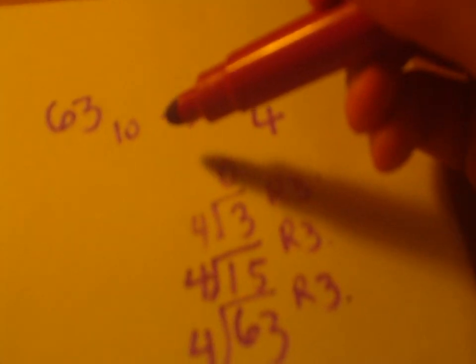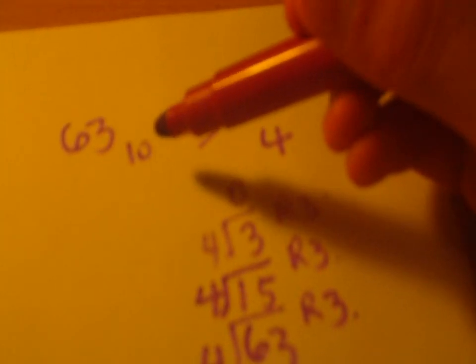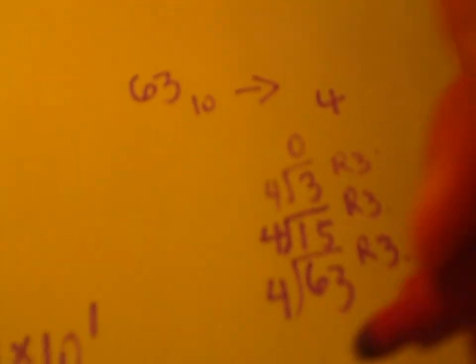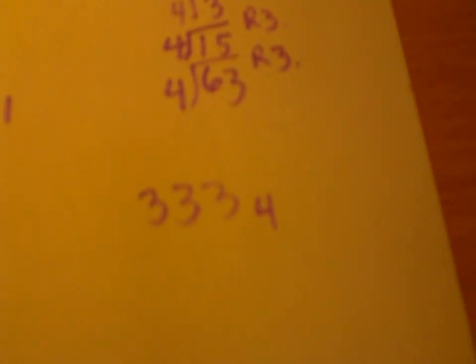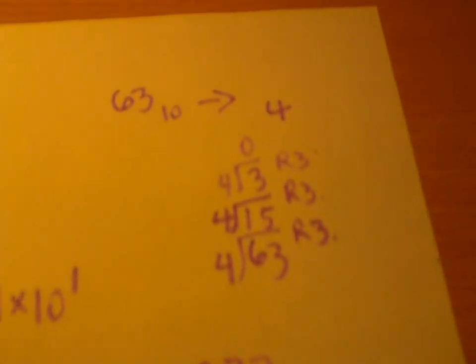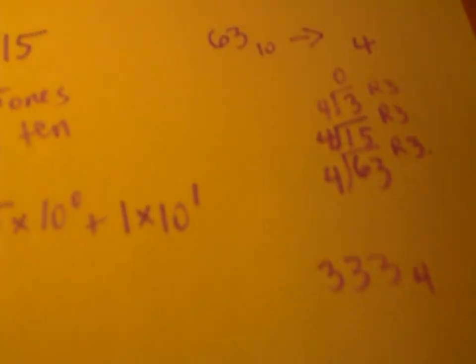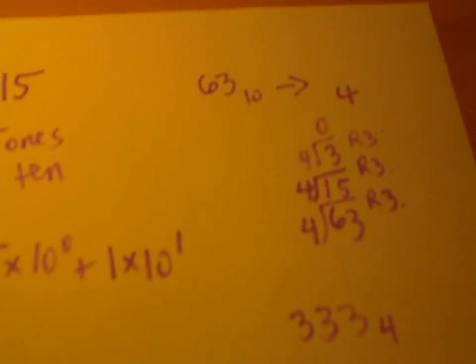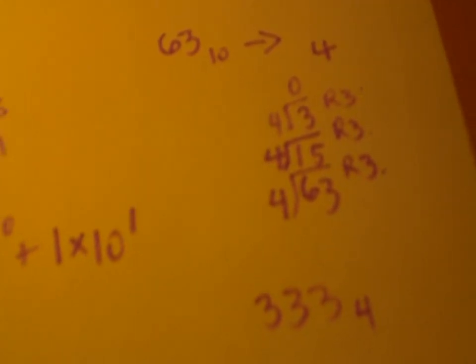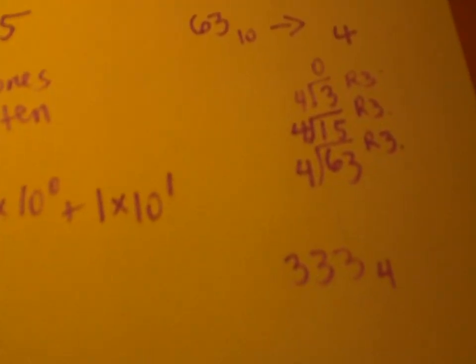So, 63 in base 10 is equivalent to 333 in base 4. I didn't mean for that coincidence to happen, it just happened. So, if we wanted to convert base n to base 10, it's actually sort of easier.